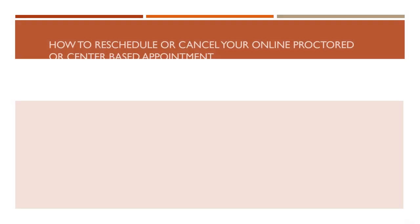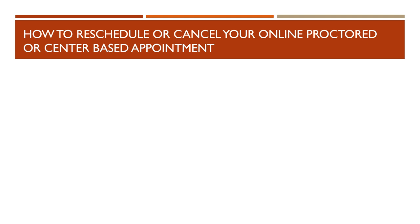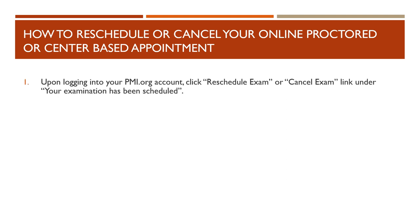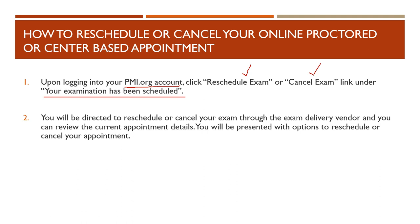Now let's talk about the mechanics — the steps on how to reschedule or cancel your online proctored or center-based appointment. Step one: log into your pmi.org account. If your exam is already scheduled, you will see something like 'Your examination has been scheduled,' and under it you'll find links for 'Reschedule Exam' or 'Cancel Exam.' Step two: once you click on reschedule or cancel, you will be directed to do so through the exam delivery vendor, which could be Pearson VUE.